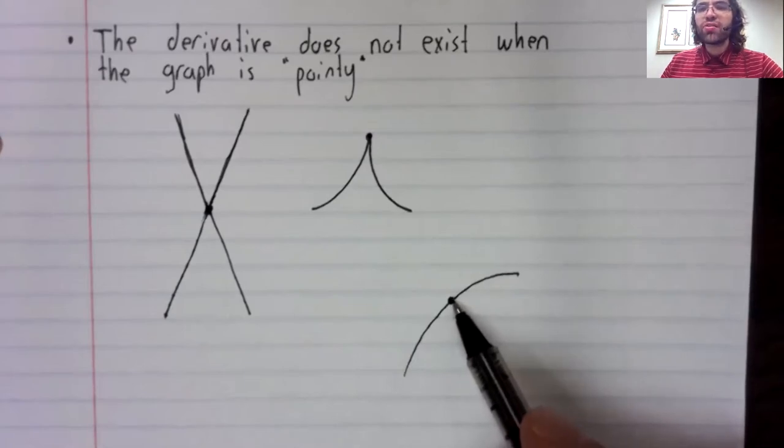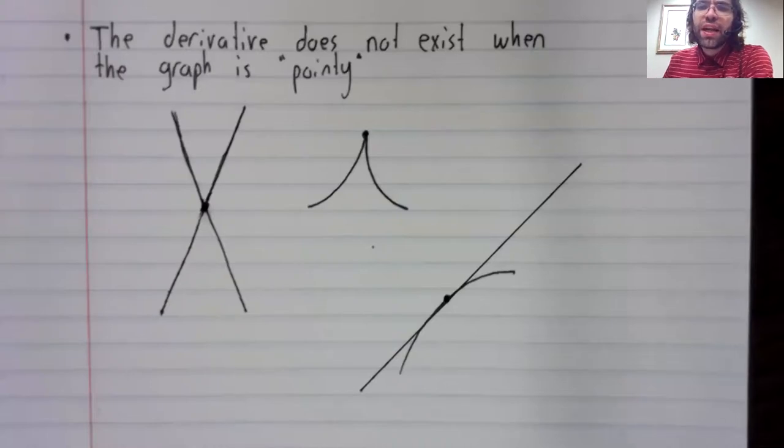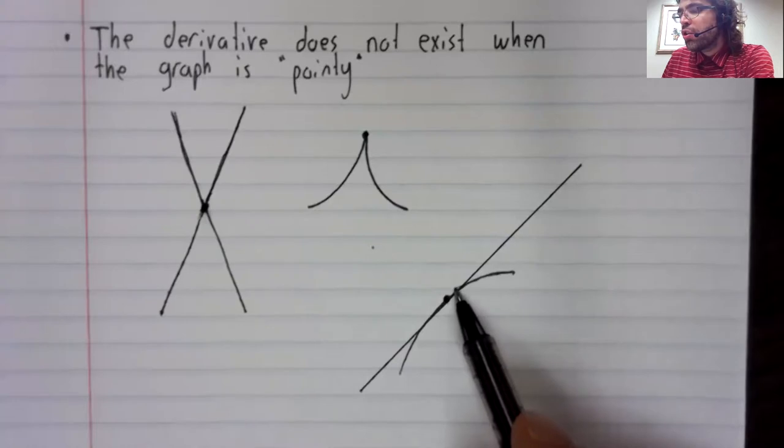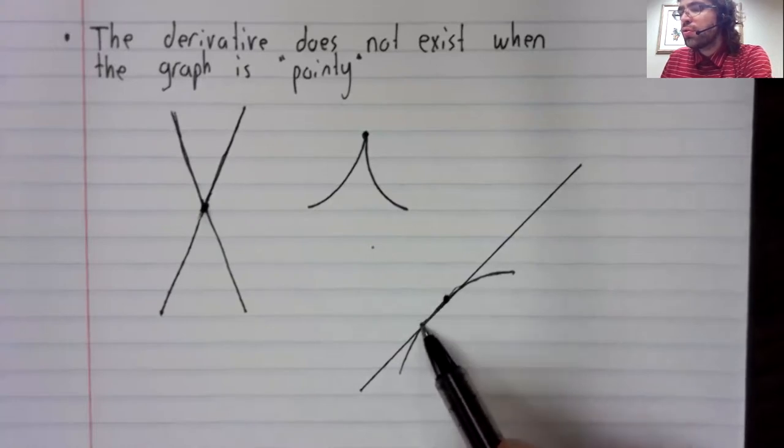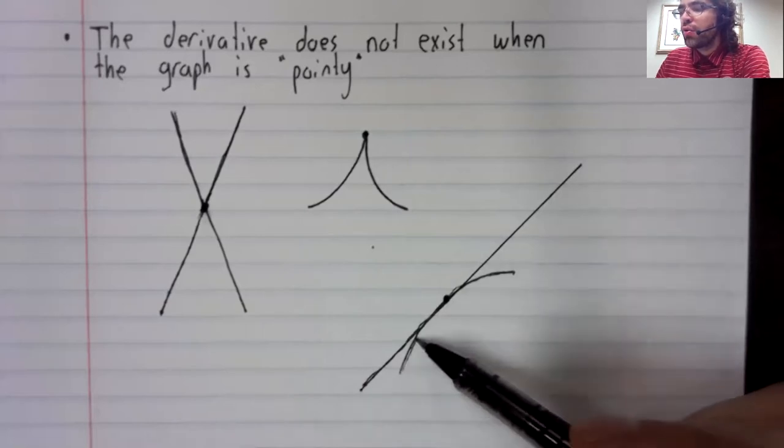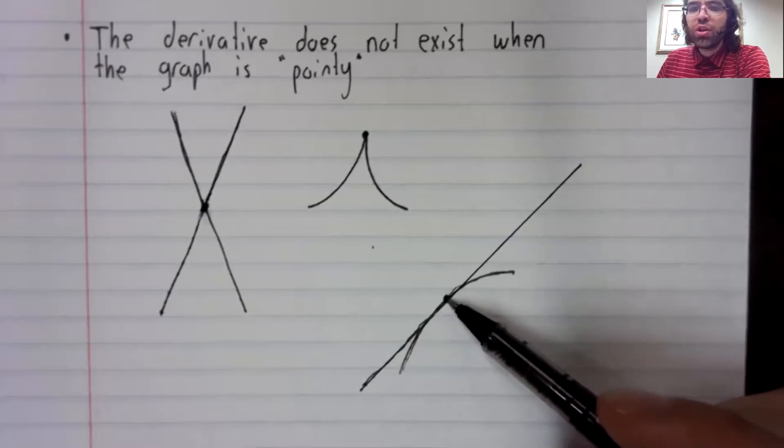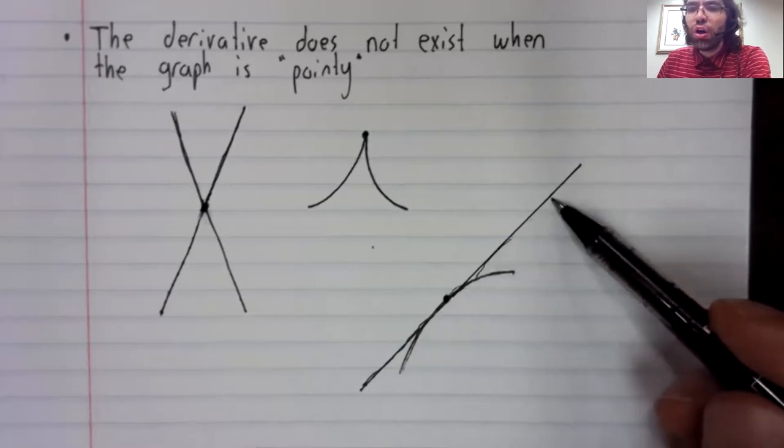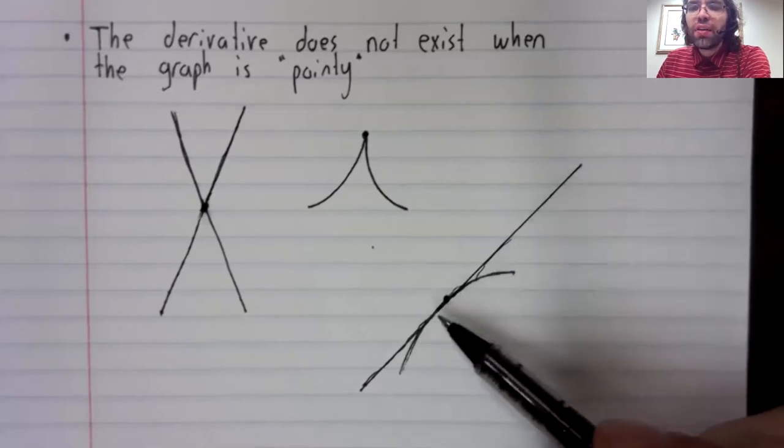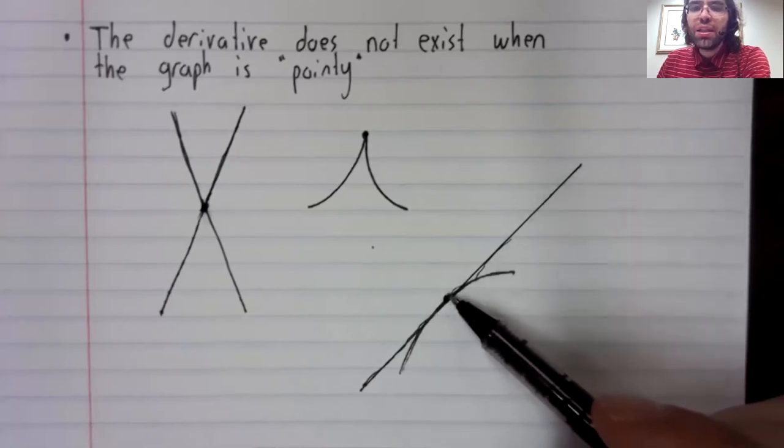Compare that to something like this. The derivative exists here, and there's a tangent line. You're driving along, you're driving along, you're driving along, your brakes lock, you travel along the same line. We don't have that issue here.